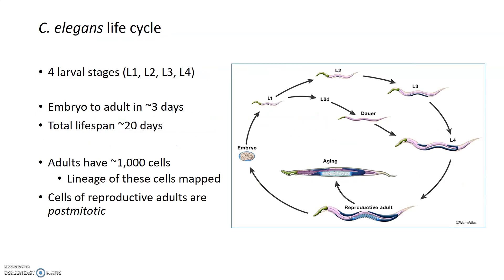C. elegans has been used to study aging for a very long time for several reasons, one of which is that the development of C. elegans is very well studied and also very predictable. After embryos are laid, C. elegans will go through four larval stages — L1, L2, L3, and L4 — before becoming a reproductive adult. That happens in about three days, and the total lifespan of a worm is only about 20 days, more like 15 total days. So you can have reproductive adults in three days and complete your whole aging experiment in less than three weeks.